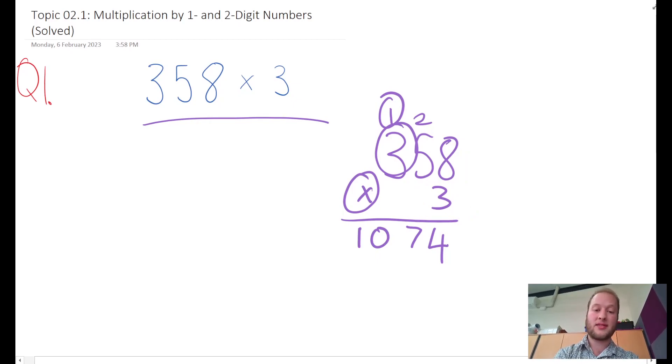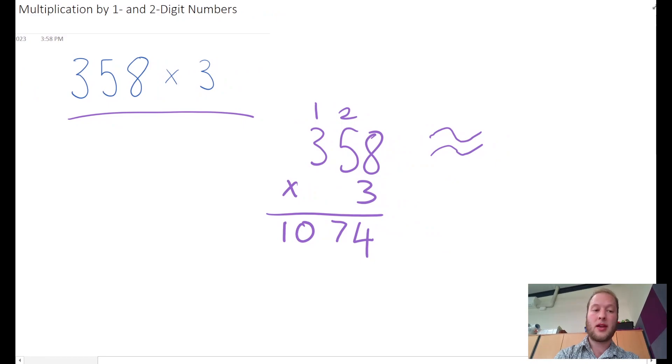My answer is 1074. It's always helpful to quickly estimate. 358 is close enough—if I round it up to the nearest 100, it's nearest to 400. 400 times 3 is 12, and then add my two zeros: 1200. 1200 is close to 1074, so that's probably correct.